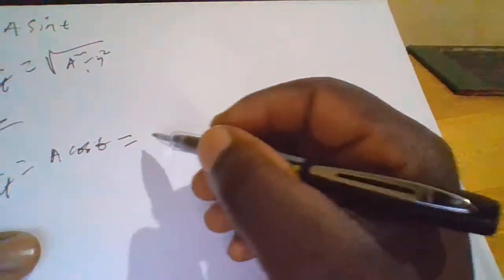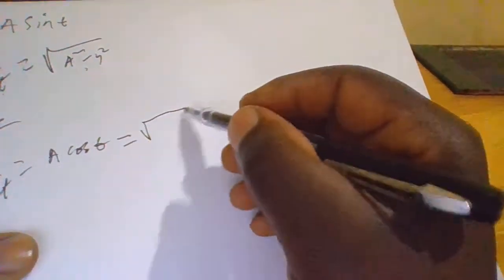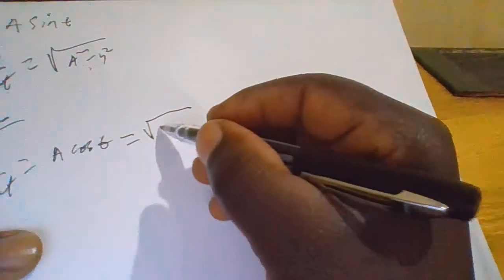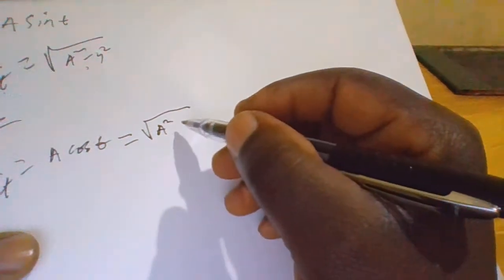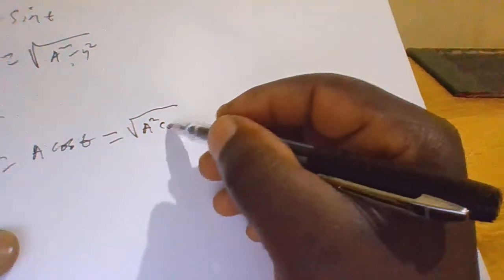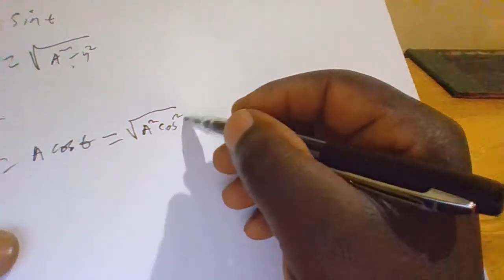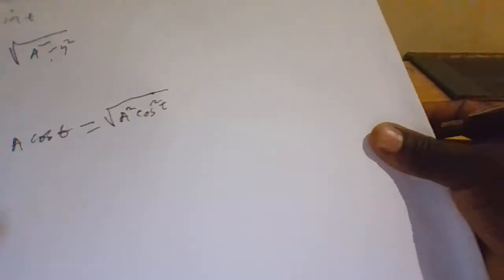So you can say that this is the same as the square root of A squared cos squared t.